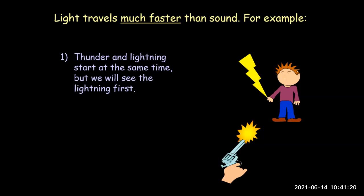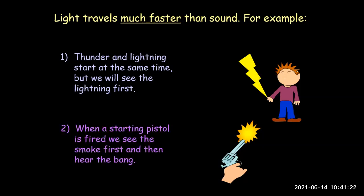The second example is a pistol being fired. When a pistol is fired at the start of a race, we see the smoke first and then hear the bang. Again, this is because light travels faster than sound.